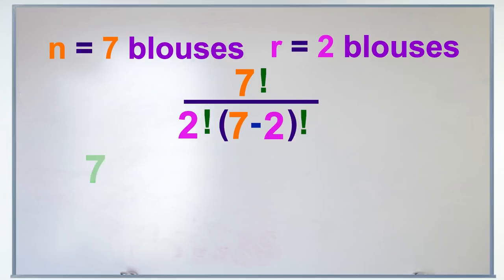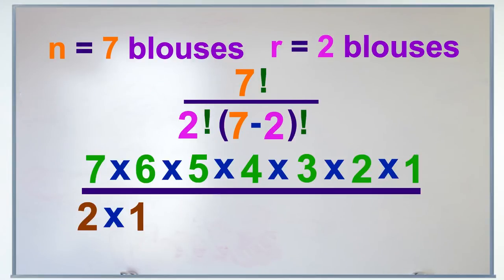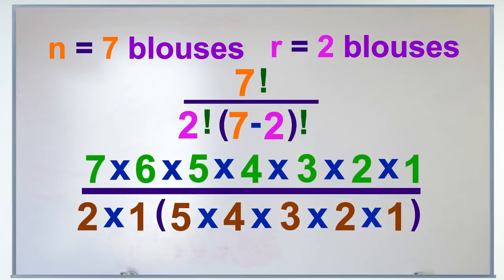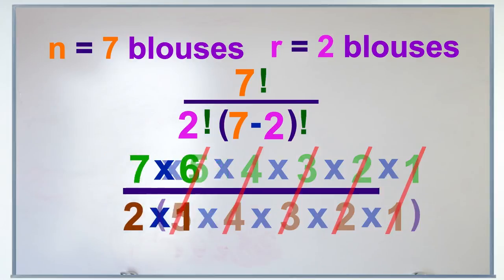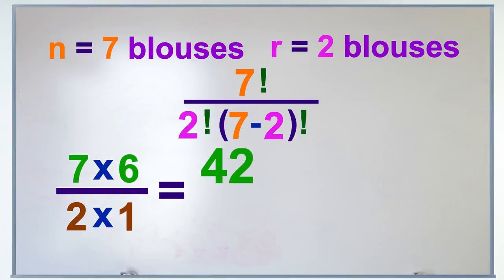Or 7 times 6 times 5 times 4 times 3 times 2 times 1, all over 2 times 1 times 5 times 4 times 3 times 2 times 1. We can start by canceling everything from the 5 on down, which leaves us with just 7 times 6 over 2 times 1, which is 42 over 2, or 21.